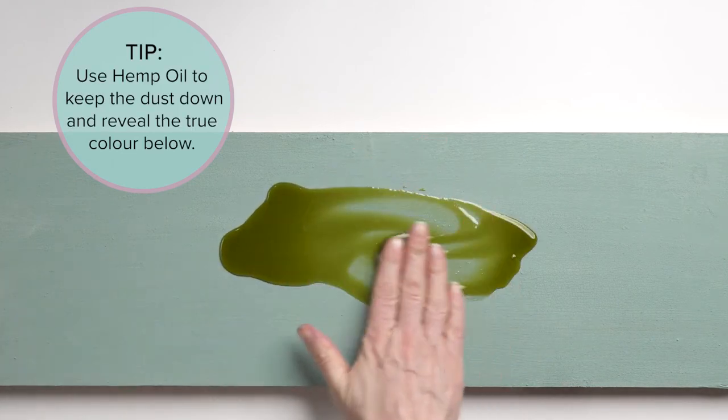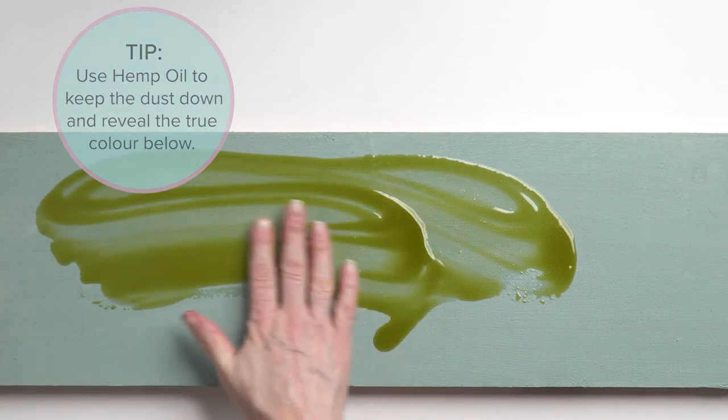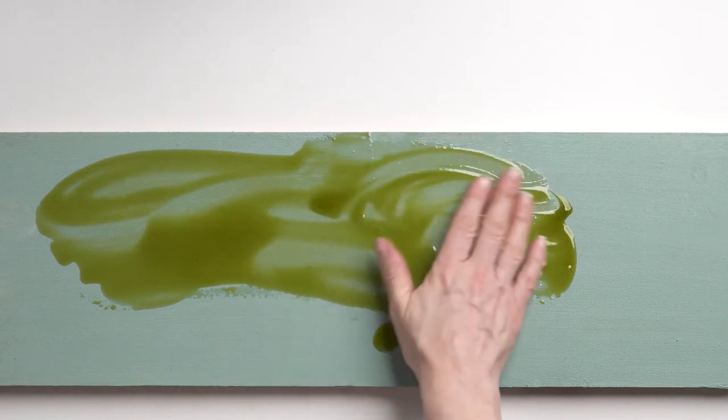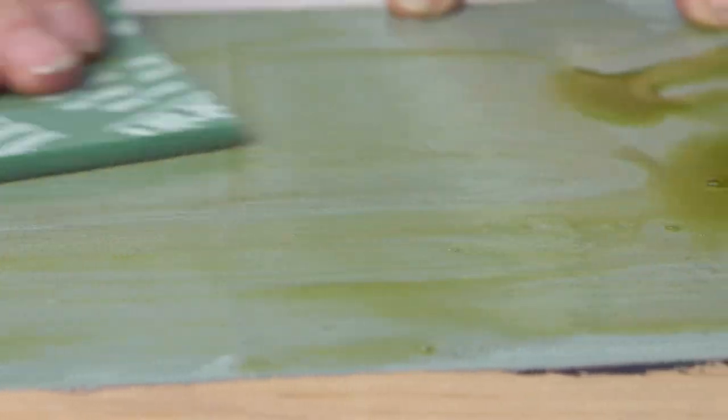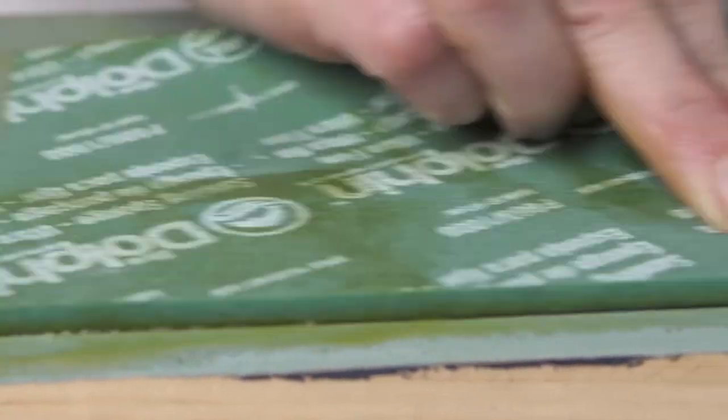keep the dust down and also helps to reveal the true color below, as sometimes when you sand, the colors can get muddied together. This technique allows you to see a crisp color reveal and you can see exactly how much you are distressing.